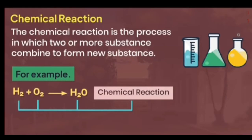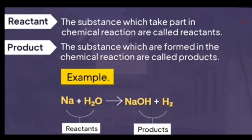Hi students, in this session we discuss a special topic: chemical reactions and equations. A chemical reaction is the process in which two or more substances combine to form a new substance. For example, H₂ plus O₂ makes H₂O. Here we see two or more reactants form a new product — that is a chemical reaction.